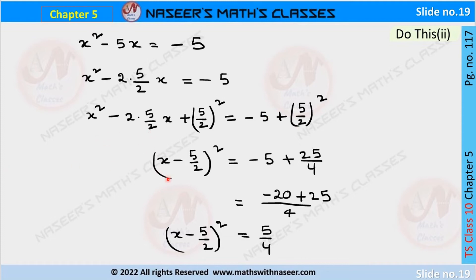The LHS becomes (x - 5/2)². On the RHS, (5/2)² = 25/4, and taking LCM: -5 + 25/4 = -20/4 + 25/4 = 5/4. So we have (x - 5/2)² = 5/4.